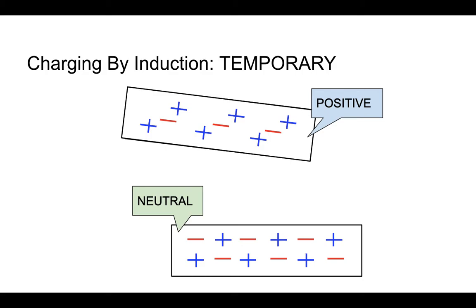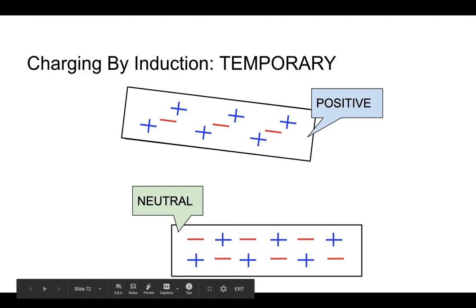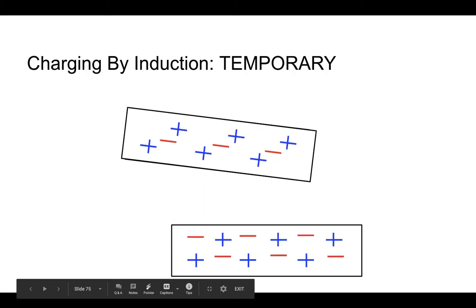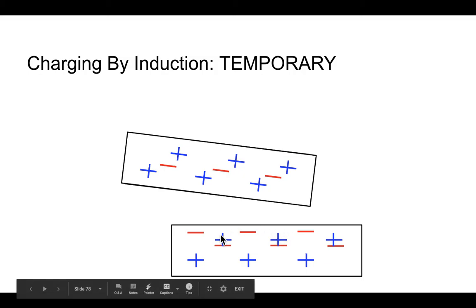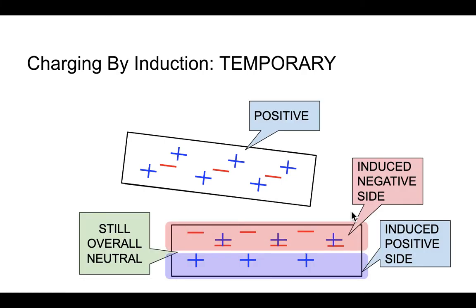We're going to do the exact same thing. We're going to take this positively charged object and bring it closer to this neutral object. Pay attention again to the negative charges in the neutral object, because as I bring this thing closer, you can see what happens. We end up seeing these negative charges — again, they're the only things that can move — and they will move closer to the surface of this object and sort of outnumber the positive charges in this edge right here. And as a result, this side takes on this sort of negative type of characteristic, behaving kind of like a negatively charged object.